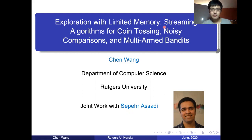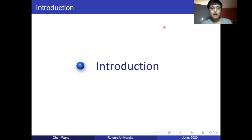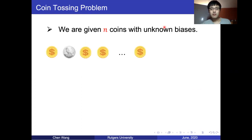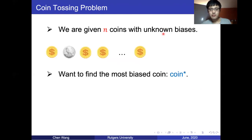So let's get started. Consider the following problem: we are given n coins with unknown biases, and we want to find the most biased coin by flipping coins. By the most biased coin, I mean the coin with the highest probability to appear 1, or heads.